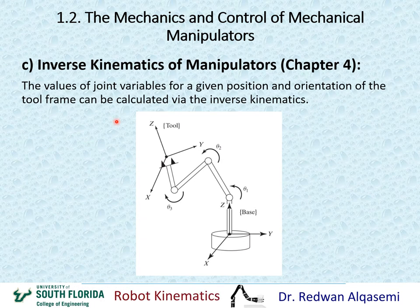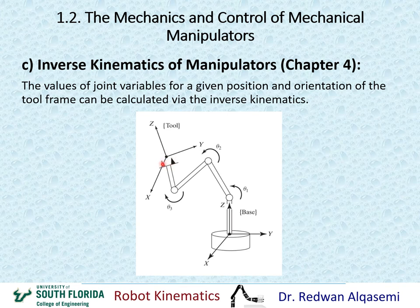In inverse kinematics it's the other way around. If I need to go to a specific location — including position and orientation in space relative to the base — inverse kinematics finds out what joint angles are needed to take the end effector or tool to that point. So in inverse kinematics we are given the end effector position and orientation, and we need to find the joint values that would take the robot arm to that point.